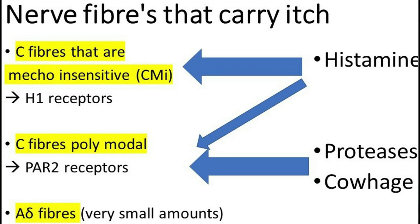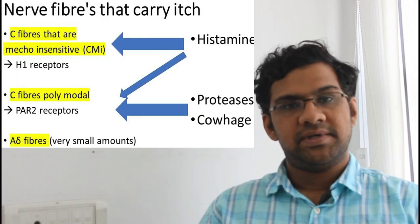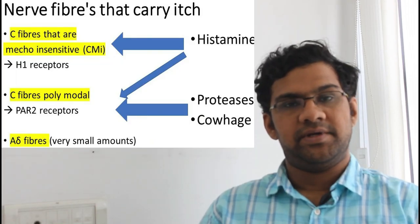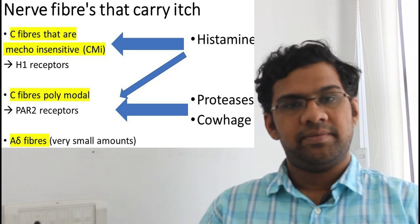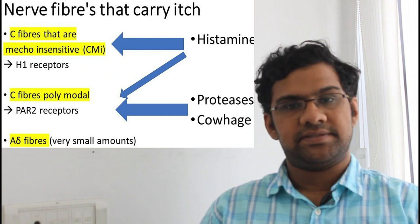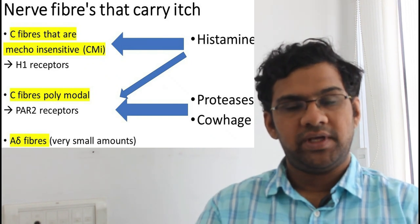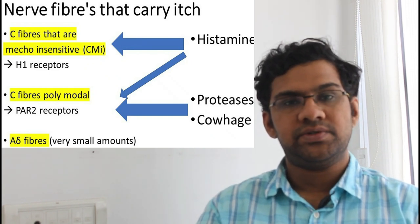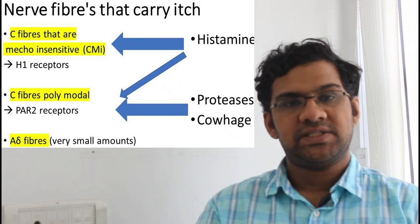They can be divided into two types depending on the sensations which they carry. The first one is mechano-insensitive C fibers, which are also called in short as CMI fibers. These are specific for transmission of itch. The other fibers are polymodal C fibers. These C fibers carry both itch sensation and also pain sensation. CMI fibers are unique for carrying histamine-induced itch, so they display H1 receptors at their nerve endings.